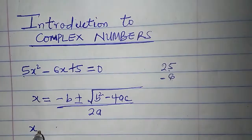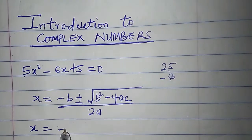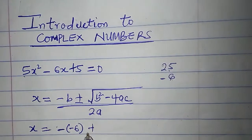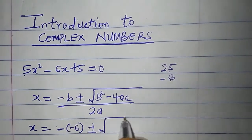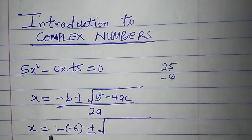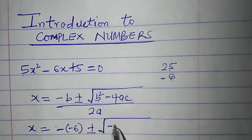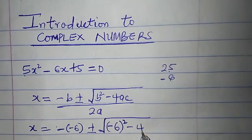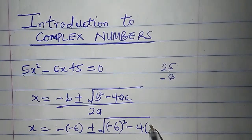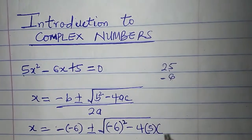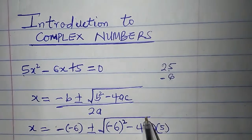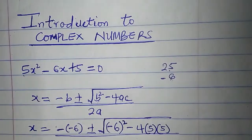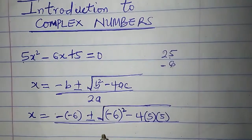So X is equal to minus B, which is minus 6, plus or minus the square root of B squared — which is minus 6 squared — minus 4 times A which is 5, times C which is 5 also, all divided by 2A. A is 5, so that's 2 times 5 which is 10.